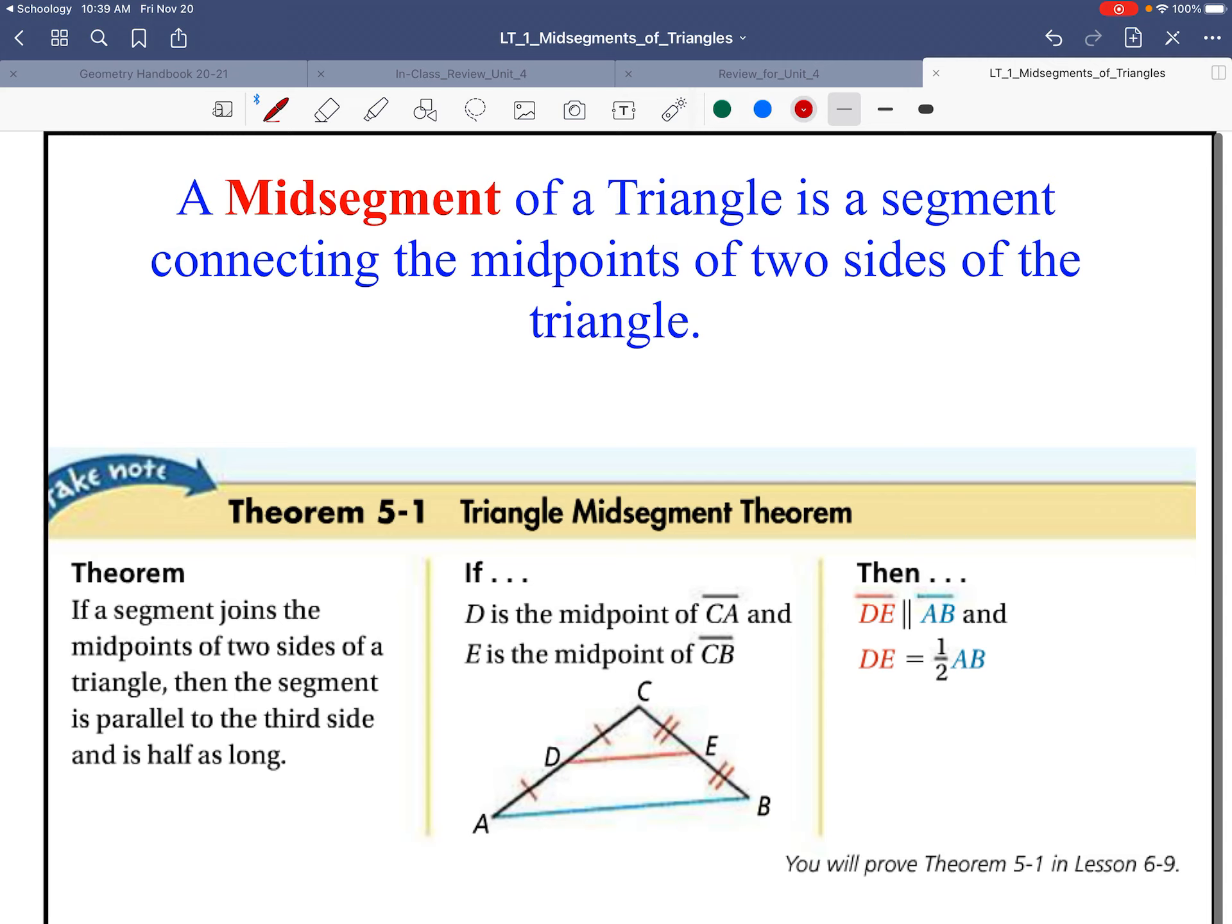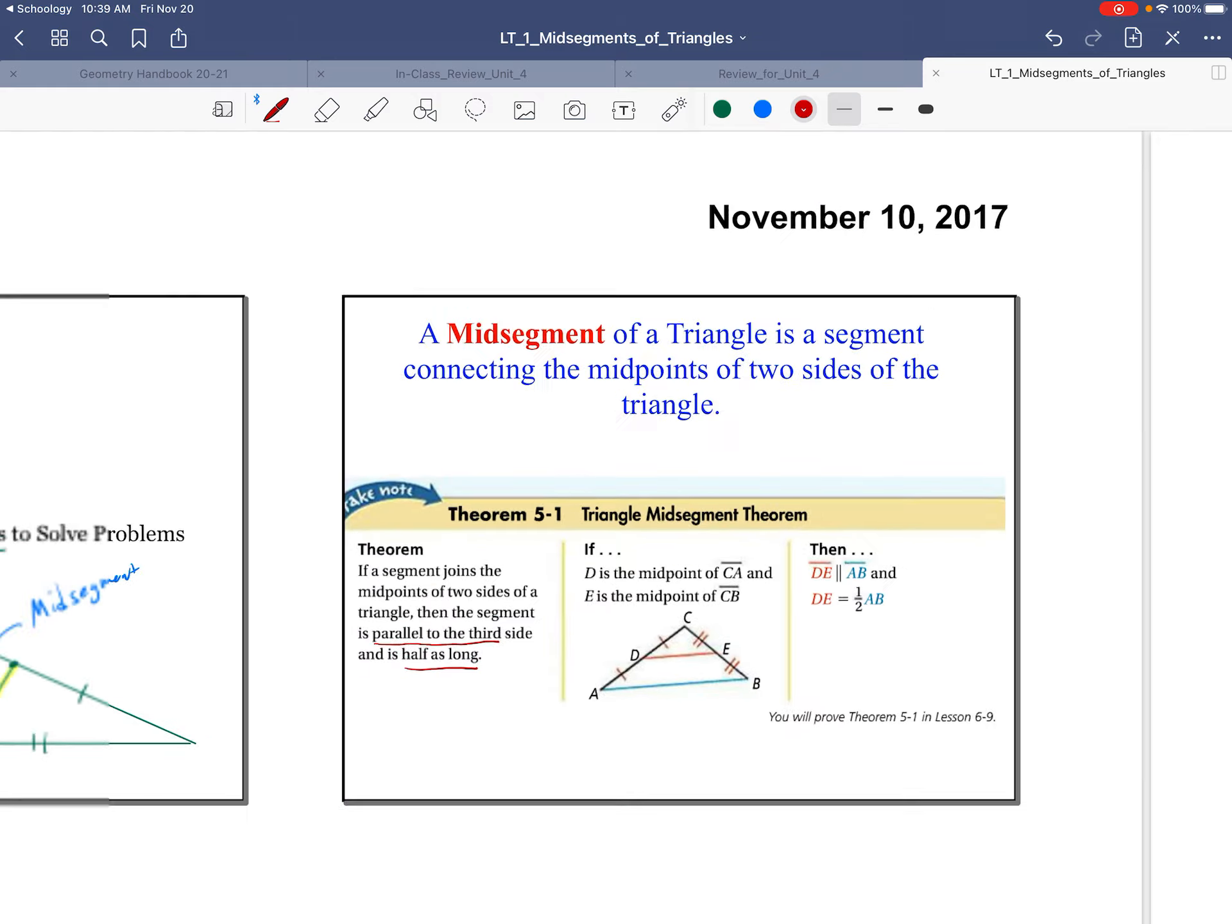A mid-segment of a triangle is a segment connecting the midpoints of two sides of the triangle. If a mid-segment joins the midpoints of two sides of a triangle, then the segment is parallel to the third side and it's half as long. That's going to go in your handbook.